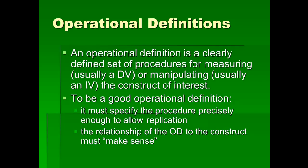To answer those first two questions, we rely on operational definitions. An operational definition is a clearly defined set of procedures for measuring — and when we're measuring it's usually a dependent variable — or manipulating — and when we're manipulating, we're usually talking about an independent variable — the construct of interest. To be a good operational definition, it must specify the procedure precisely enough to allow replication. That is, after hearing it, I should be able to do exactly what you did. Also, the relationship between the operational definition and the construct must make sense — it should be reasonably obvious to people.